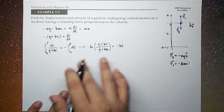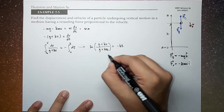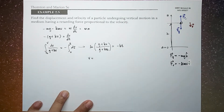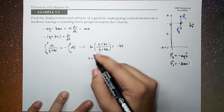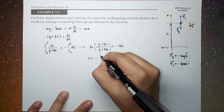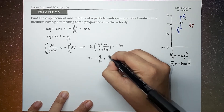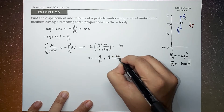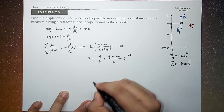Solving for v — doing the algebra — we now have v equal to negative g over k, plus (g plus kv-naught) over k, times e to the negative kt. So this is now your velocity function.